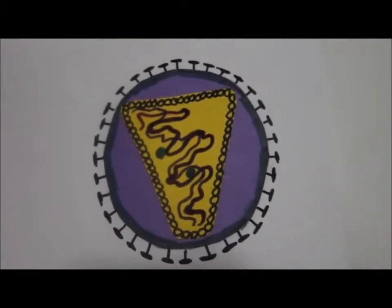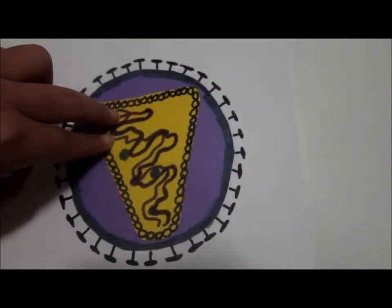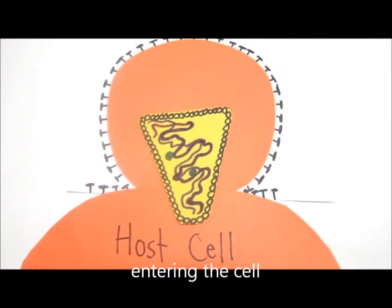The genetic material consists of two identical strands of viral RNA entering the host cell, in this case a lymphocyte.